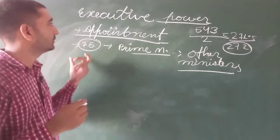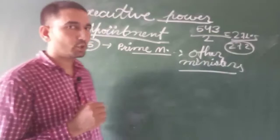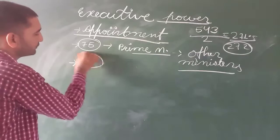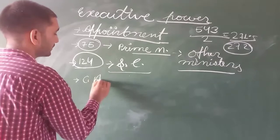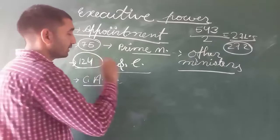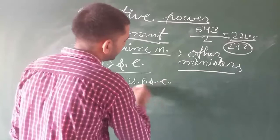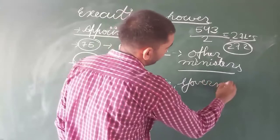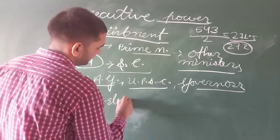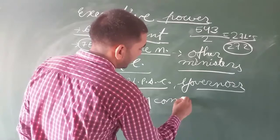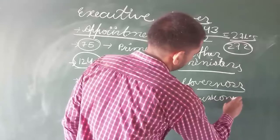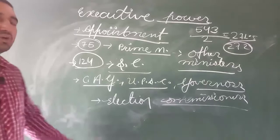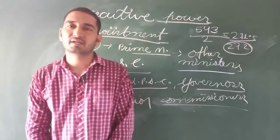Along with that, the President also appoints the judges of the Supreme Court, the Comptroller and Auditor General of the country, the Chief of UPSC, the Governors of the States, the Chief Election Commissioner and other Election Commissioners. According to Article 324 of the Indian Constitution, the Election Commissioner and other Election Officers are appointed by the President.